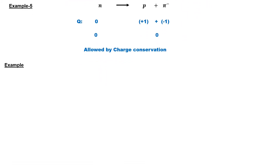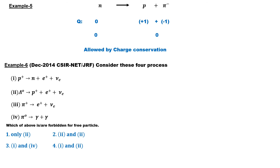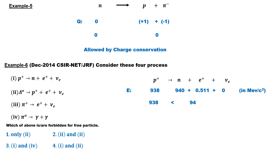In the December 2014 CSIR NET exam, a question asked which of four processes are forbidden for a free particle. The first and second reactions are forbidden. In the first reaction, a proton decays into a neutron, positron, and neutrino. This violates energy conservation: the proton mass is 938 MeV, while the neutron is 940 MeV and the positron is 0.511 MeV. The parent proton mass is less than the total daughter mass, so this reaction violates energy conservation.